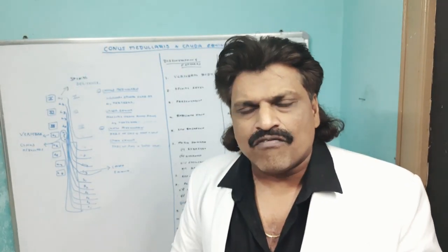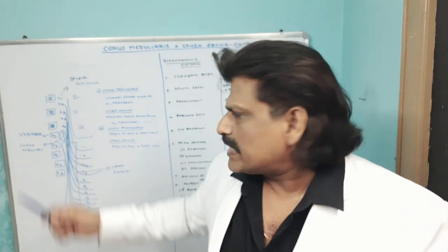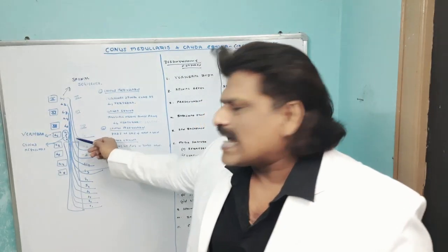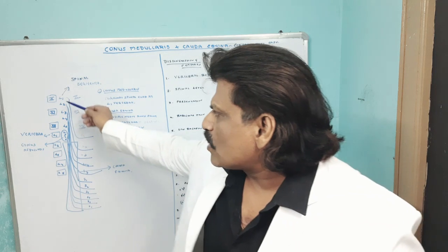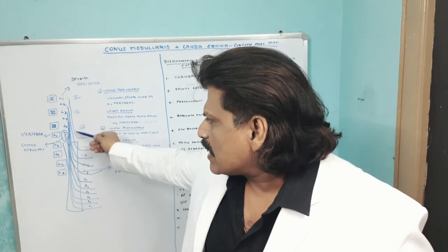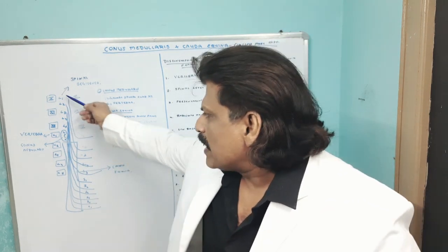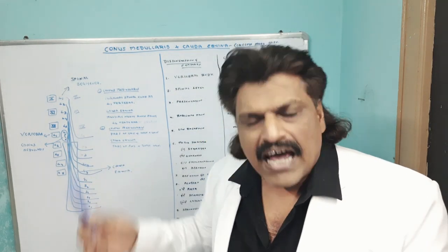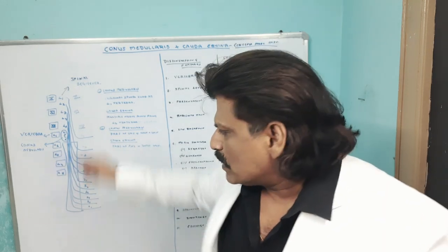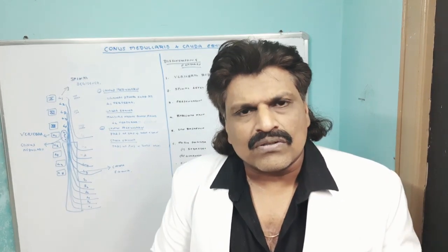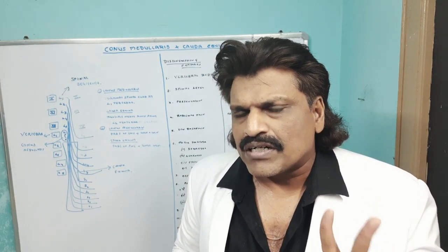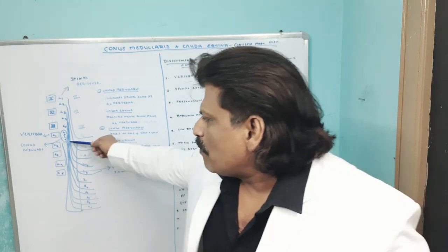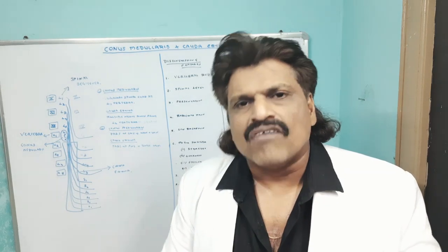T11 is at the level of L3-L4 spinal segments. The T12 vertebral body is at the L5 spinal segment, and at the L1 vertebral body you have the sacral and coccygeal segments. So the spinal cord ends at the level of L1. The spinal roots, for example L1 and L2, have to take a long course and go to their respective foramen. Below L1 they are nothing but spinal nerve roots — there is no spinal cord.